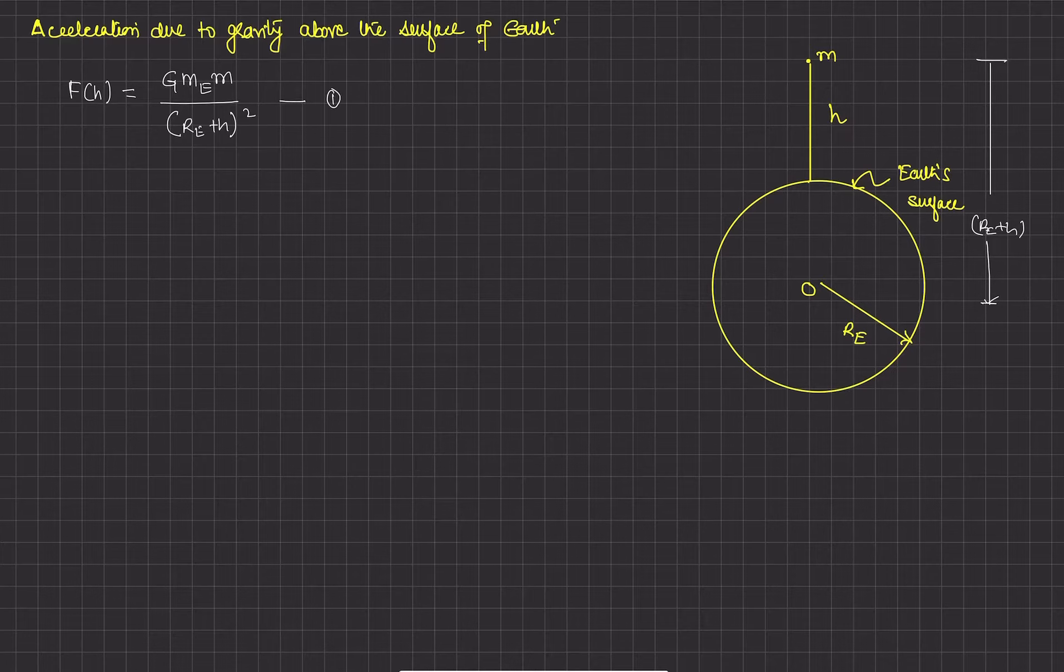Now we know that according to Newton's second law of motion F equals ma. But here in this case, in place of a there is g. So the force at a height h is equal to mass times gravity at a height h. So gravity at a height h, acceleration due to gravity at a height h is force at a height h upon mass.